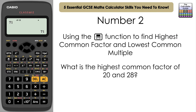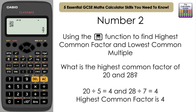The second essential skill is a secret hack for finding the highest common factor and least common multiple using the fraction button. Say we wanted to find the highest common factor between 20 and 28. Make a fraction 20 over 28 and press equals — it simplifies to 5 sevenths. Divide 20 by 5 to get 4, and 28 by 7 also gives 4. The highest common factor is 4, which is what the calculator used to simplify the fraction.